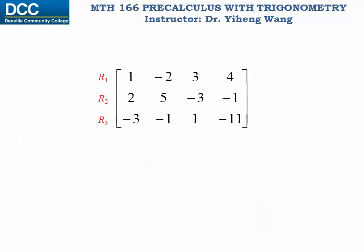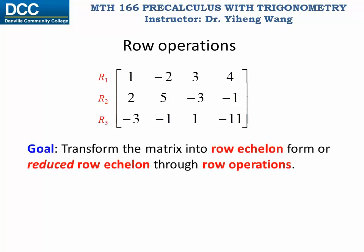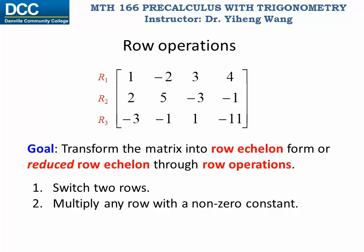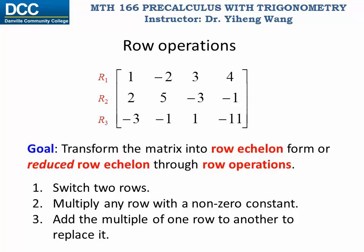Now we have transformed our original system of equations into this matrix. Don't forget this is still just a technique, and our final goal is still to solve our system of equations. To do that, we are again going to apply row operations, similar to what we have learned before. We need to transform this matrix into row echelon form, or the reduced row echelon form. If the matrix is transformed into the reduced row echelon form, we can read the solution to the system directly. Row operations include switching two rows, multiplying any row with a non-zero constant, and adding the multiple of one row to another to replace it.